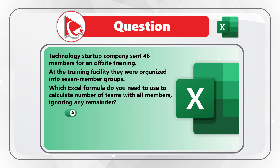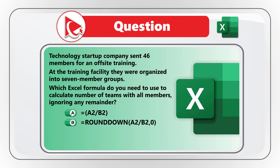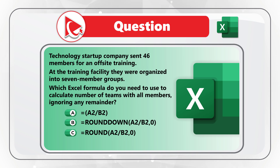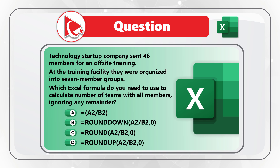You're presented with four choices: choice A, divide cell A2 by B2; choice B, use the ROUNDDOWN formula with A2 divided by B2 as the first argument and zero as the second argument; choice C, use the ROUND formula with A2 divided by B2 and zero as the second argument; and choice D, use the ROUNDUP formula with A2 divided by B2 and zero as the second argument.